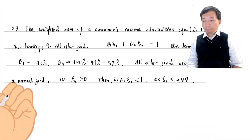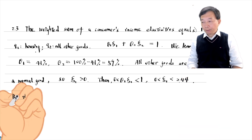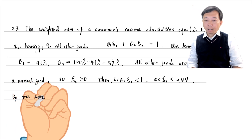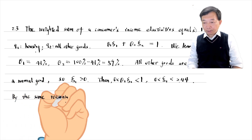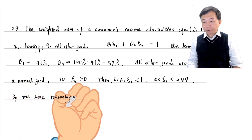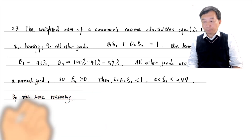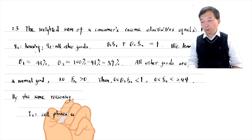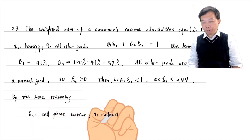By the same reasoning, we obtain the income elasticity of cell phone service between 0 and 50.